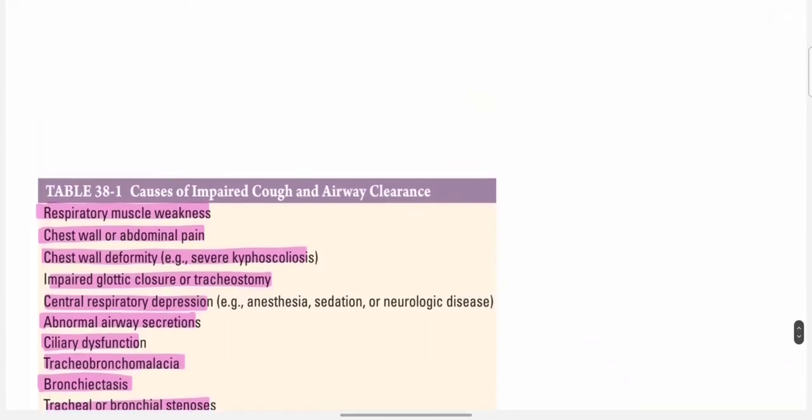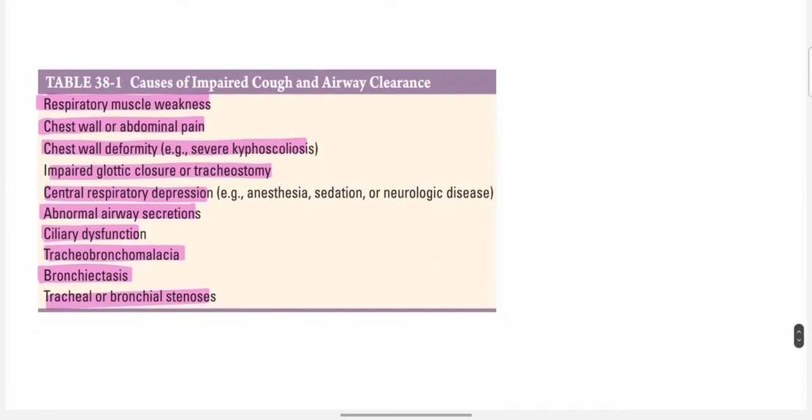When this mechanism is impaired, there is impaired cough. Causes include respiratory muscle weakness, chest wall or abdominal pain, chest wall deformity, severe kyphoscoliosis, impaired glottic closure or tracheostomy, central respiratory depression, abnormal airway secretion, ciliary dysfunction, tracheobronchomalacia, bronchiectasis, and tracheal or bronchial stenosis.